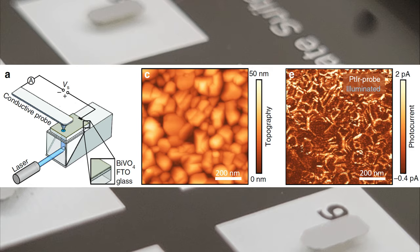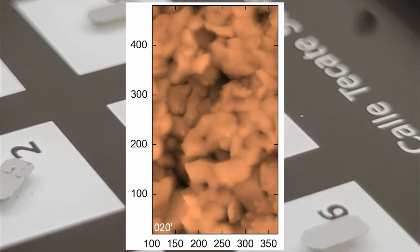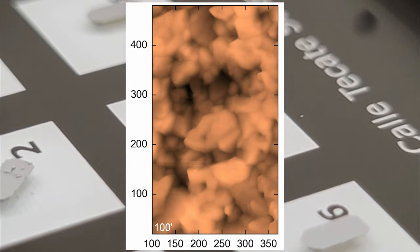This technique can also be done in photoelectrochemical cells to map processes like photocorrosion, etching, and chemical reactivity of surfaces, as shown in this sequence of images.